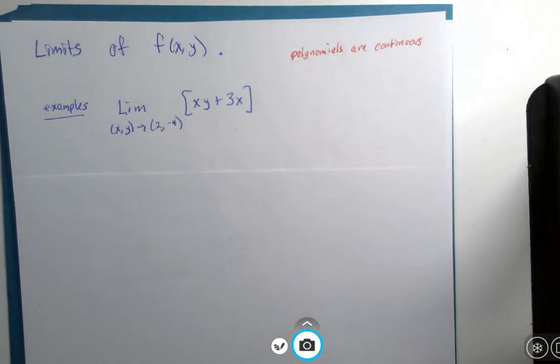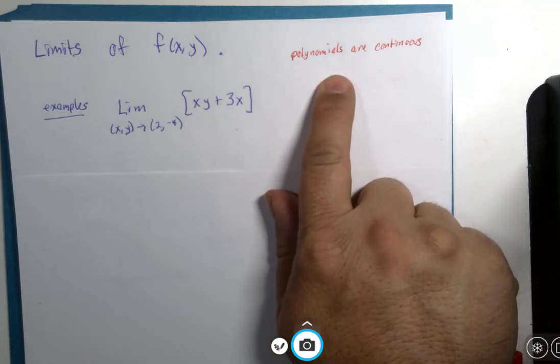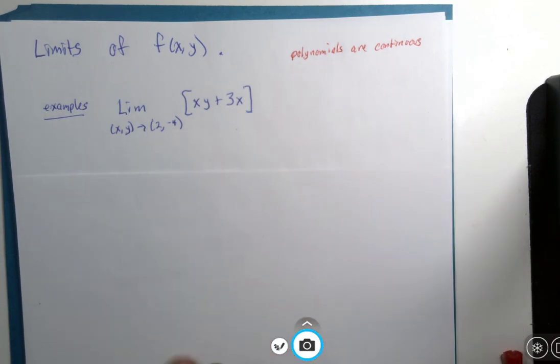And continuous functions are really much simpler to deal with when it comes to limits. The proving of this is really more advanced analysis, certainly more advanced than we have time for in this little segment.